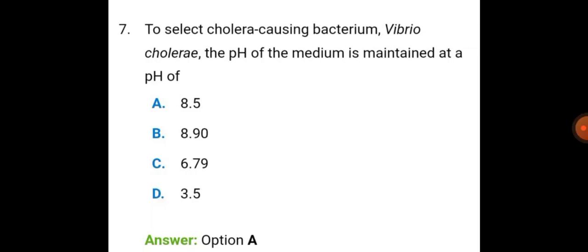To select cholera-causing bacterium, Vibrio cholerae, the pH of the medium is maintained at a pH of 8.5.